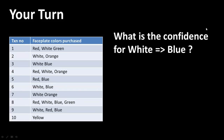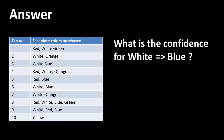Now that we've discussed confidence, it's time for you to take a shot at it. What is the confidence for white implies blue? Pause the video, find your answer, and then we'll continue. The answer: we want to find the proportion of cases in which white occurs — that happens to be 8, in rows 1, 2, 3, 4, 6, 7, 8, and 9. It doesn't occur only in rows 5 and 10. Out of these 8 cases, blue also occurs in 4 of them — rows 3, 6, 8, and 9 — and therefore the confidence is 0.5.